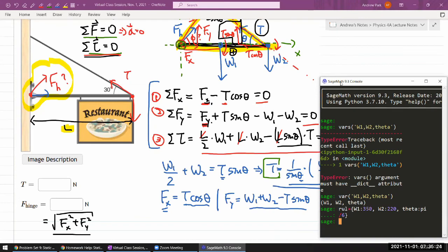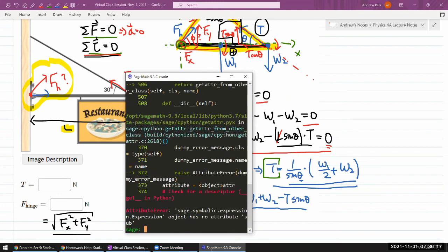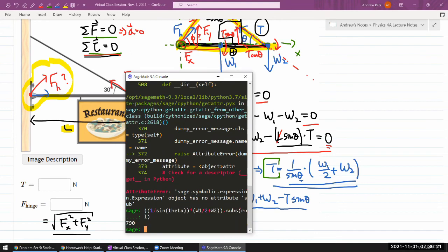For me to plug in numbers, this is how I can do it. For T, this is the expression: 1 over sine of theta times W1 divided by 2 plus W2. That whole thing gives me an expression for T. There's a bound method called sub, and I substitute in these symbols for those values. When I do that, tension force is 790. That's my answer for the tension force, 790.